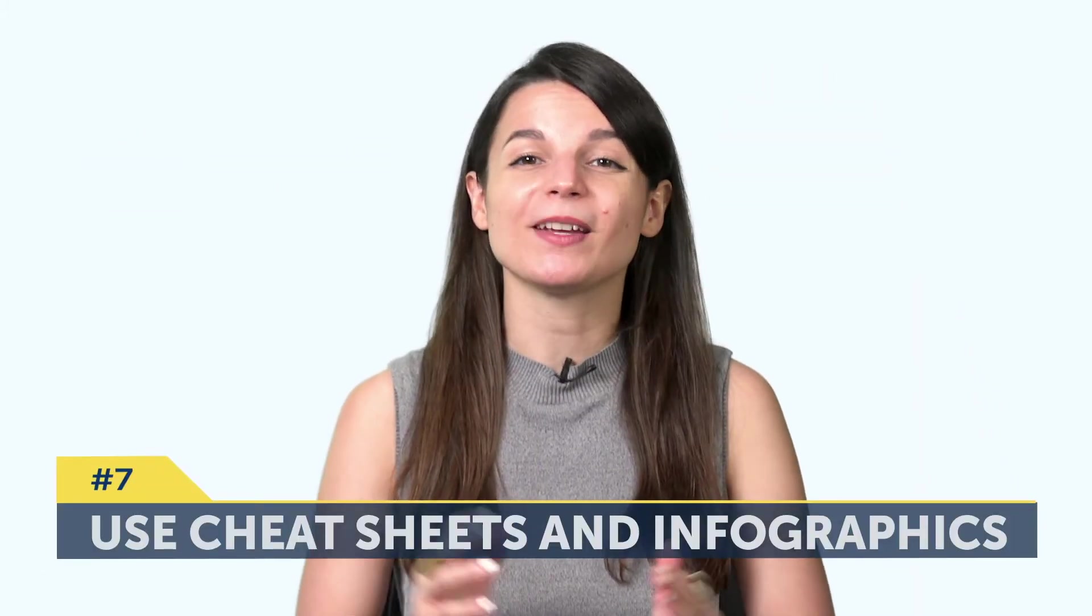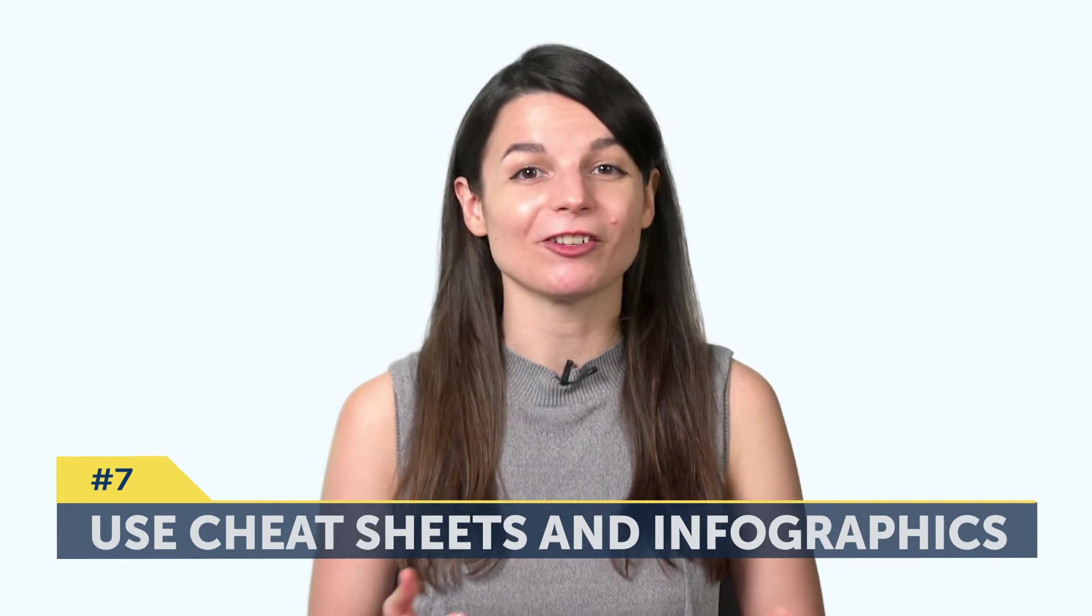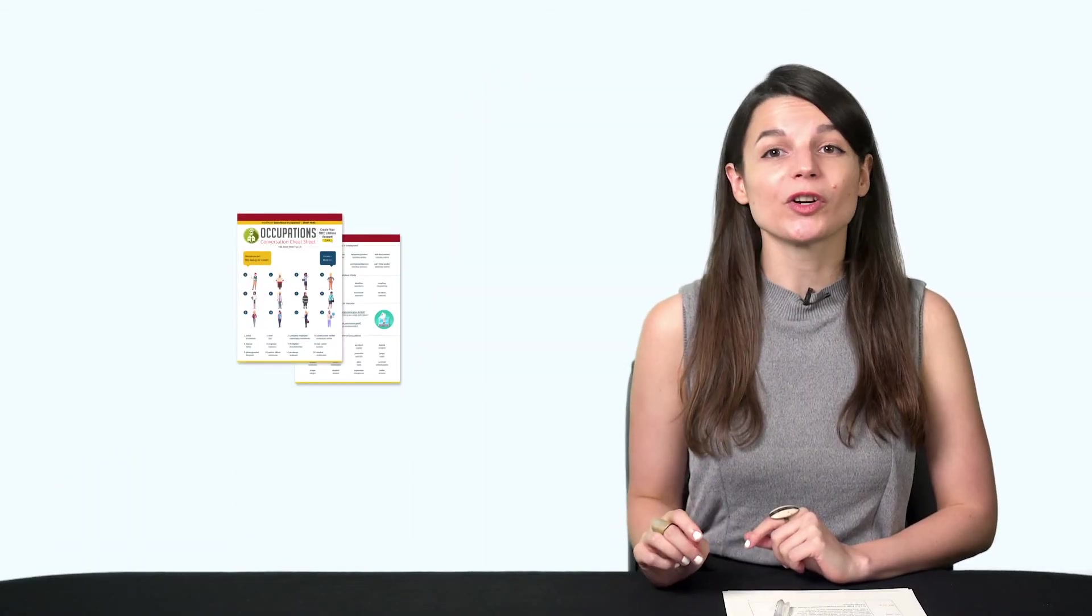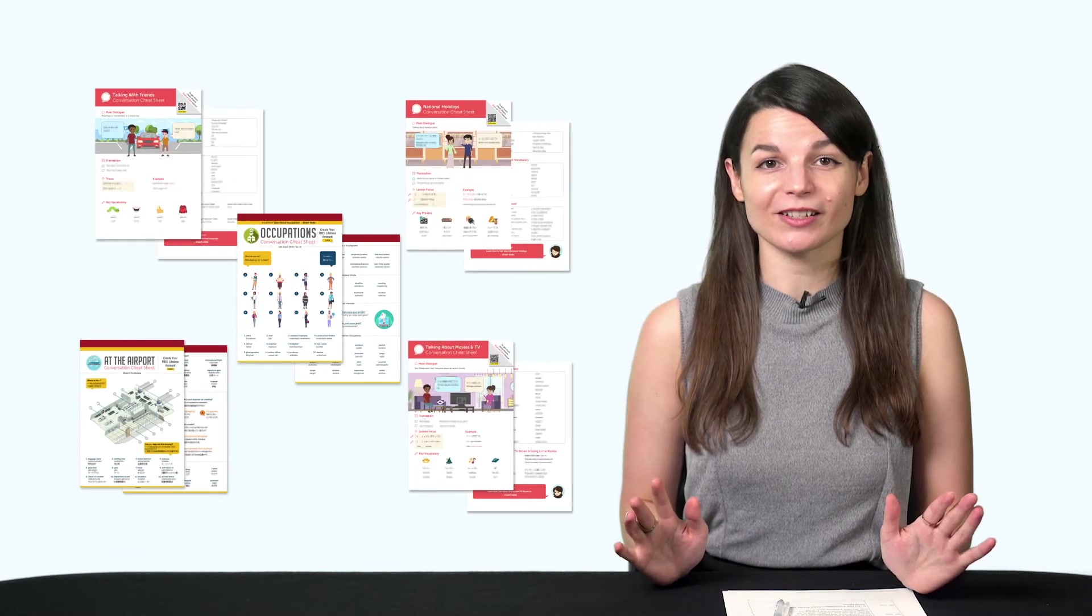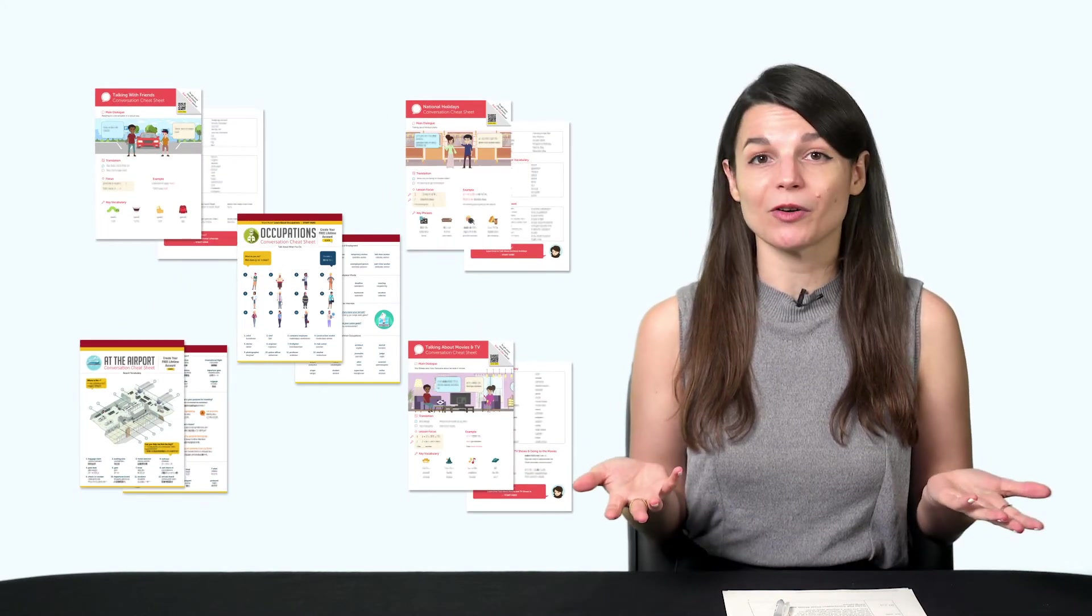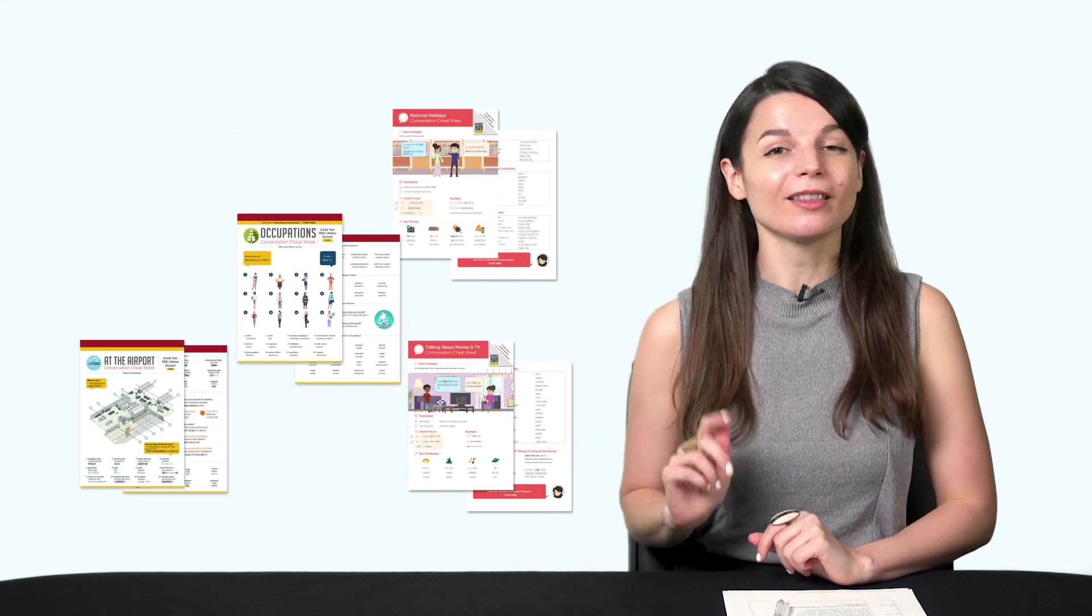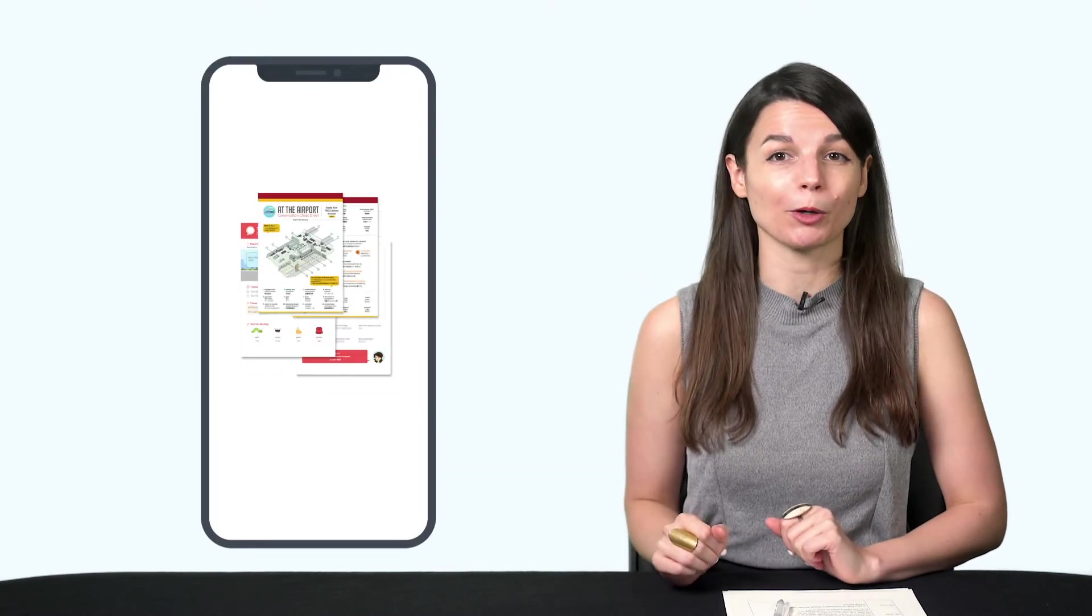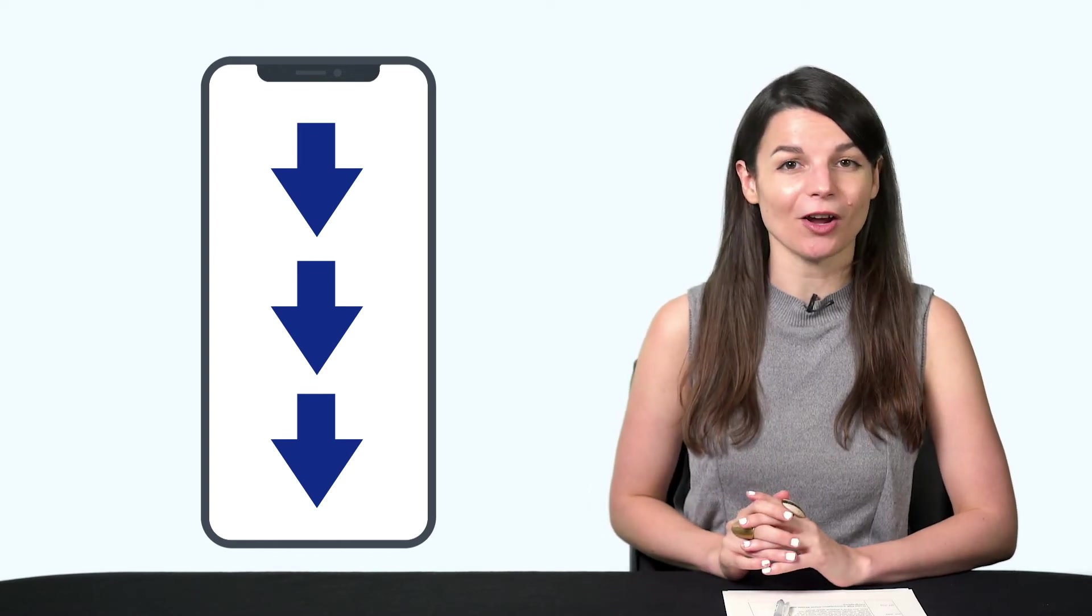Seven, use PDF conversation cheat sheets and infographics. These teach you the must-know words and phrases for all kinds of topics. Travel, basic conversations, talking about hobbies, airport vocab, and much more. You can print these out or save them to your device. With the infographics, you can save the images to your phone and just swipe through them for a quick review. We'll leave the links to the PDFs and infographics in the comment section of this video.